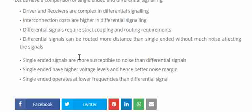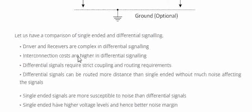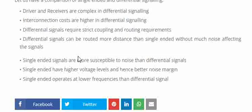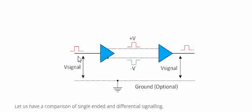Single-ended operates at lower frequencies than differential signaling, which is a disadvantage. So there is a trade-off here. If you want to choose between single-ended and differential signaling, you have to see the various parameters that we have discussed and come to a conclusion. This is a very important topic in high-speed designs.